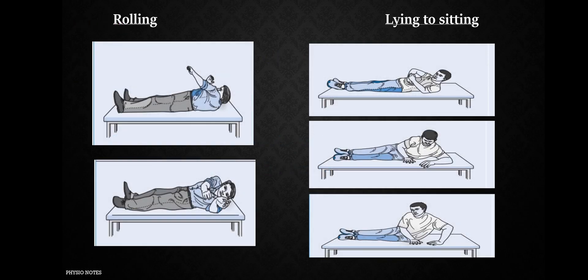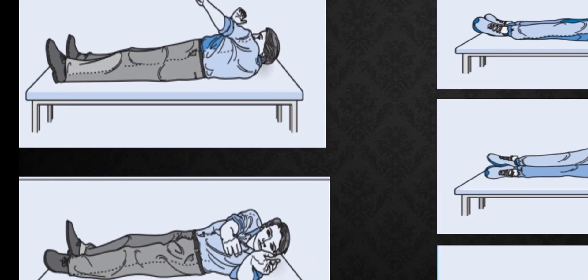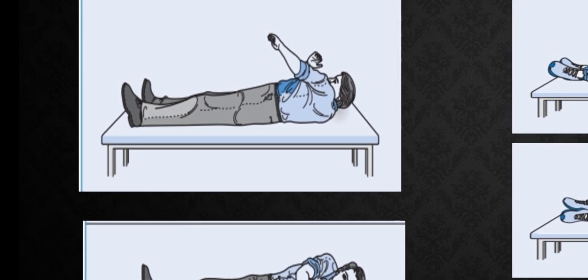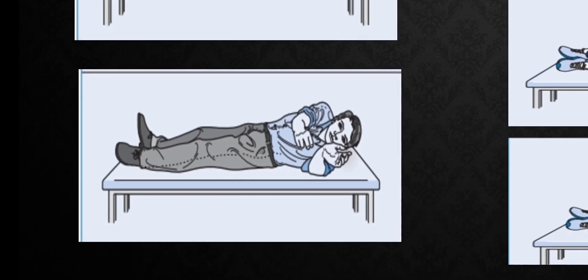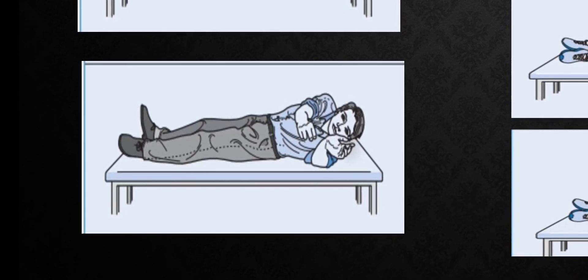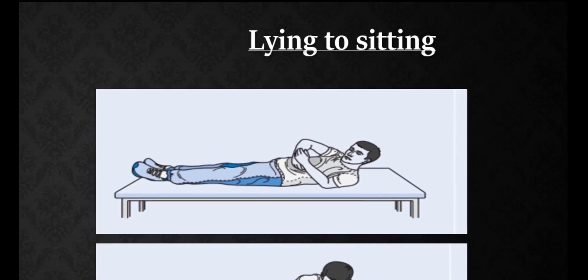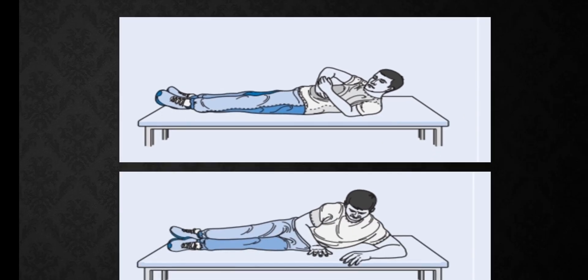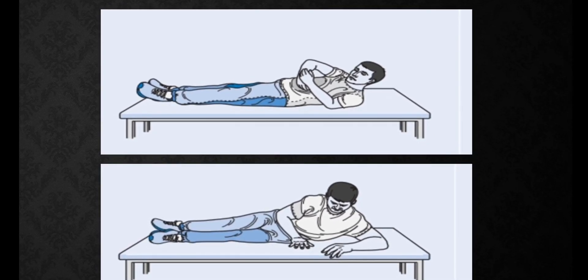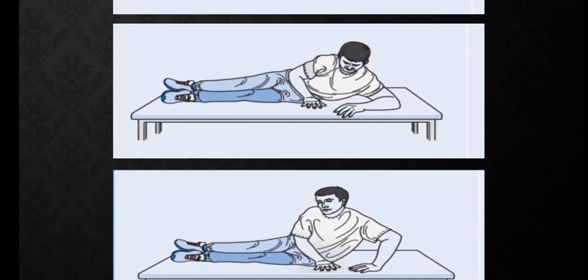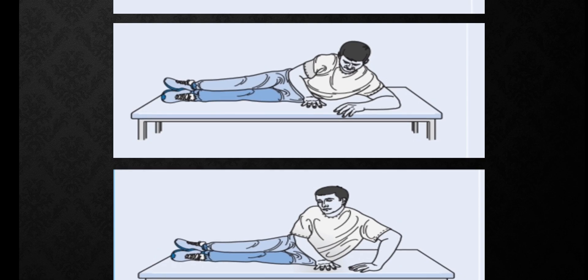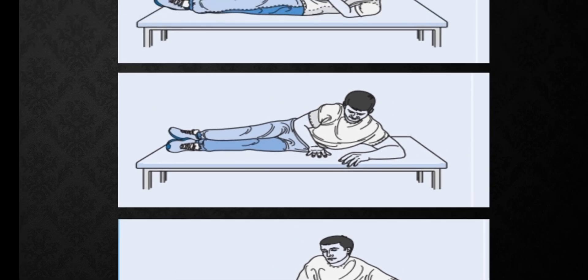In this picture, the patient begins rolling with arm swinging, comes to the sidelying position, and then transitions from lying to sitting. The patient first comes to sidelying, puts weight on the elbow, then slowly rises by putting weight on the hand to reach a sitting position.